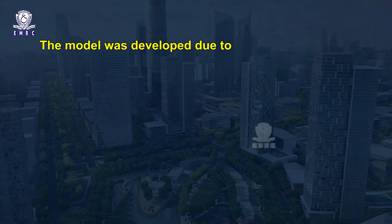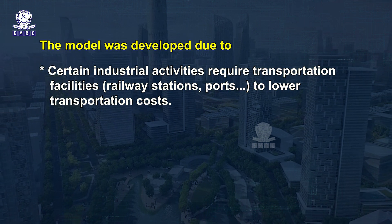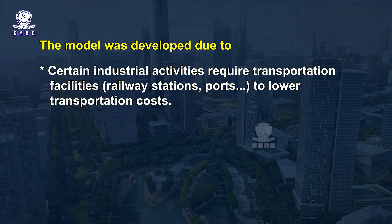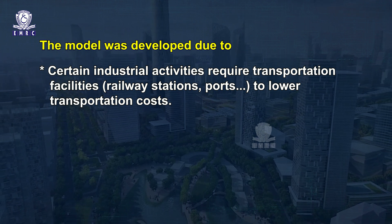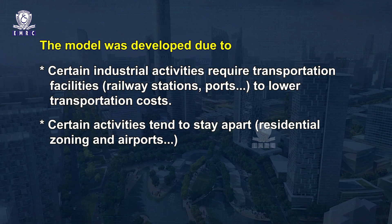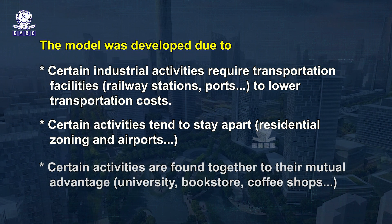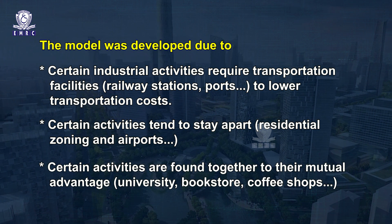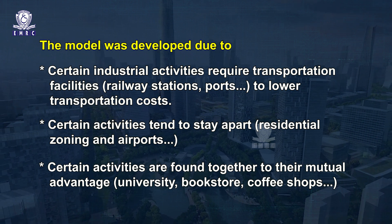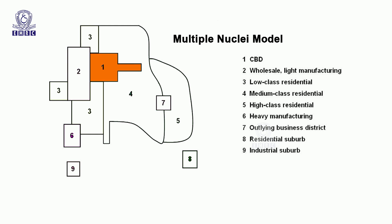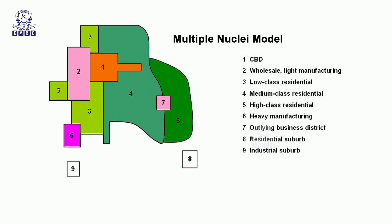The model was developed due to certain factors. First, certain industrial activities require transportation facilities such as railway stations and ports to lower transportation costs. Second, certain activities tend to stay apart — for example, residential zoning and airports. Third, certain activities cluster together to their mutual advantage, such as universities, bookstores and coffee shops. The multiple nuclear type is further divided into zones: central business and wholesale or light manufacturing, low income residential, medium income residential, high income residential, heavy industry, outlying businesses, residential suburb, and industrial suburb.